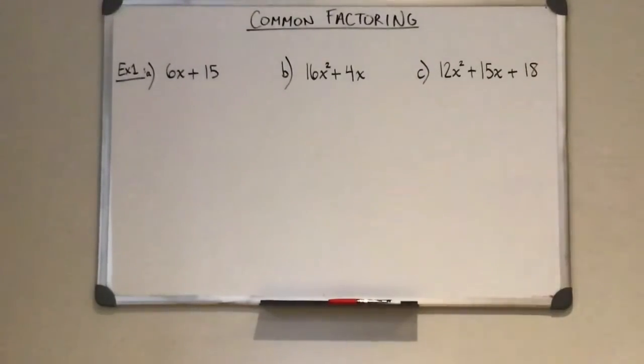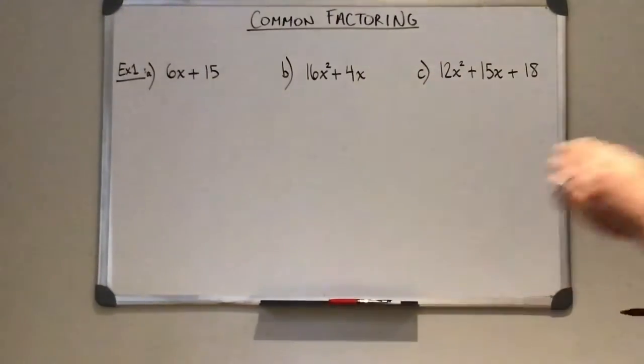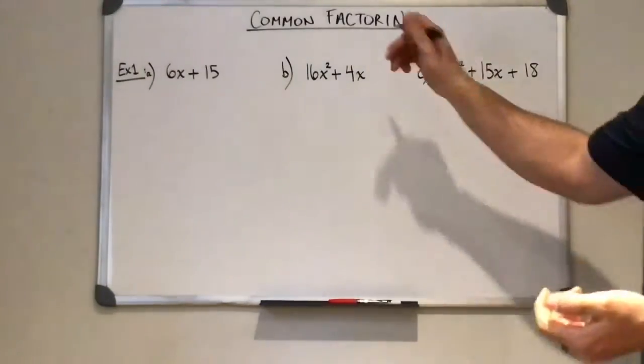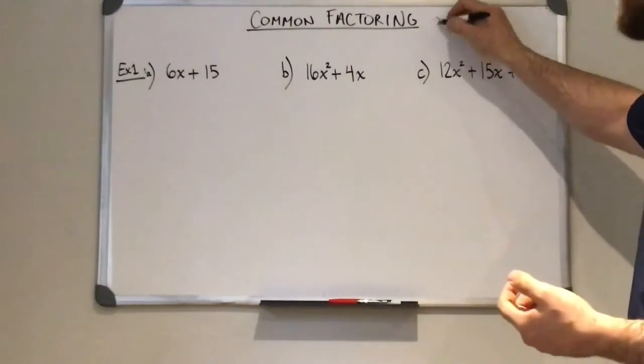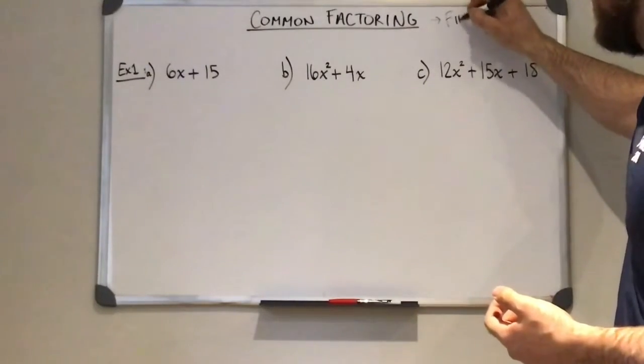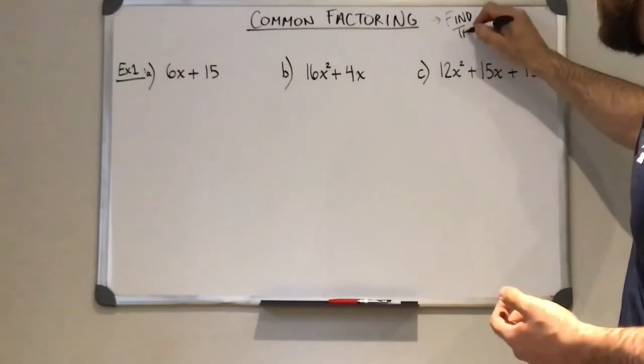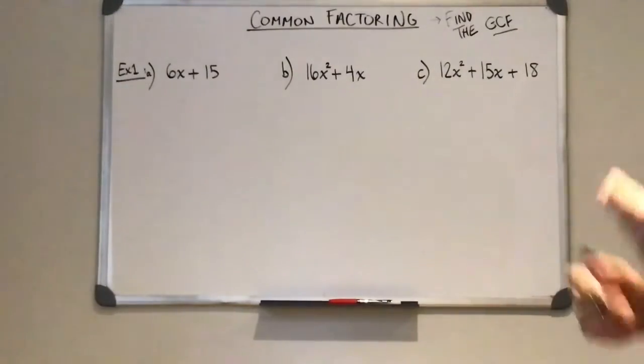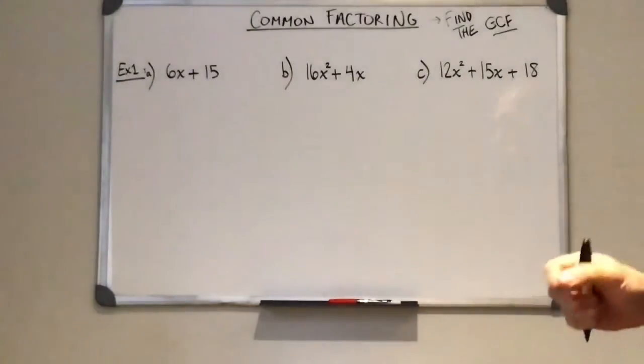Alright, so I want to make a little video about common factoring, and we're going to look at three different examples here. So common factoring, we're going to need to find the GCF. So the GCF is the greatest common factor.